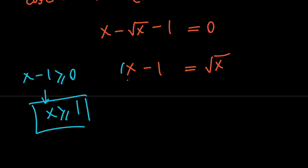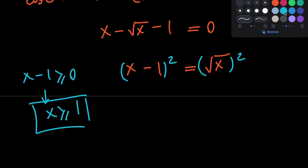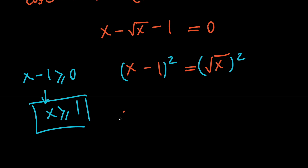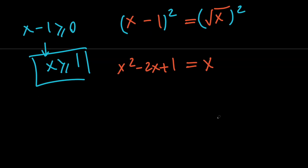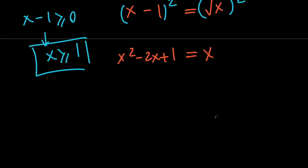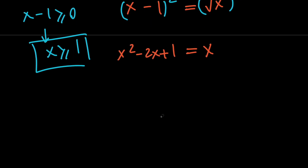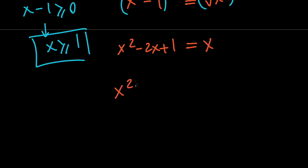Next, let's go ahead and square both sides to get rid of the radical. So we're going to have x squared minus 2x plus 1 equals x. And then if we move the x to the left-hand side, we get a simple quadratic equation: x squared minus 3x plus 1 equals 0.